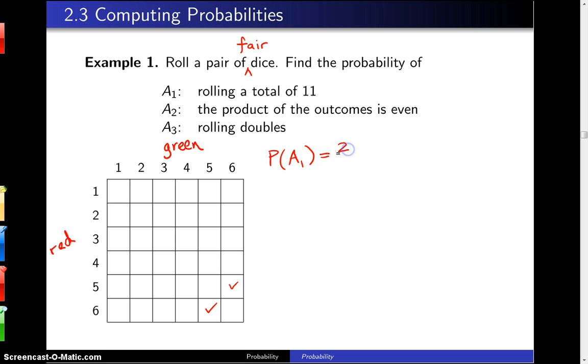So that is two out of the 36 equally likely outcomes, and in lowest terms that is 1/18.